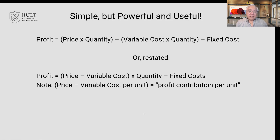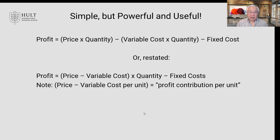So the profit equation is: profit equals price times quantity minus variable cost times quantity minus fixed costs — or restated as (price minus variable costs) times quantity minus fixed costs. The expression price minus variable costs is the profit contribution per unit — contribution to cover fixed costs and profit. If that amount exceeds fixed costs, we're making a profit; if not, we're losing money.